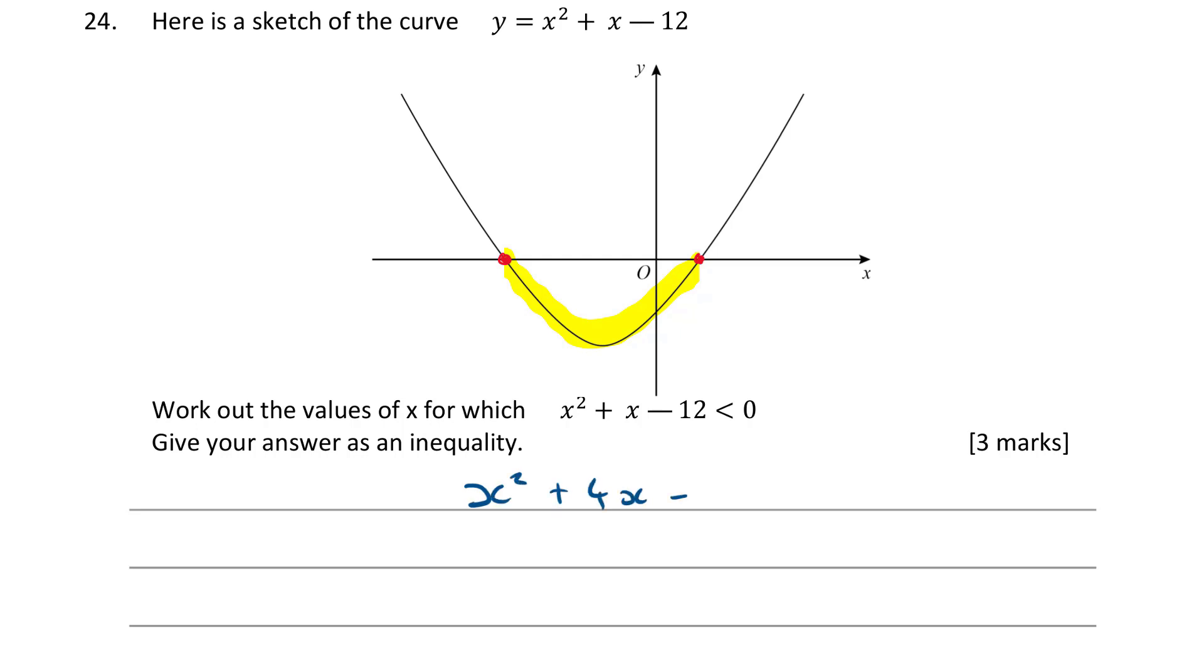So x squared plus 4x minus 12 is less than 0 is the same thing as the factorized form of x squared plus 4x minus 12. What are the factors of 12? Factors of 12 are 1 and 12, 2 and 6, 3 and 4. Which one of those have a difference of 4? These two: 2 and 6. So I can factorize x squared plus 4x minus 12 as x plus 6, x minus 2.